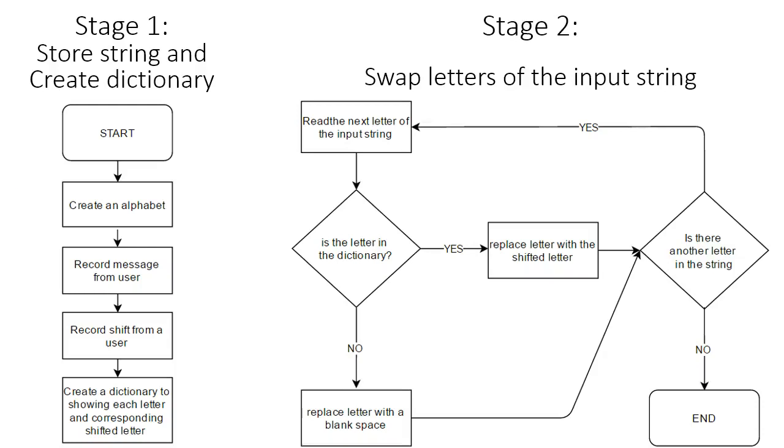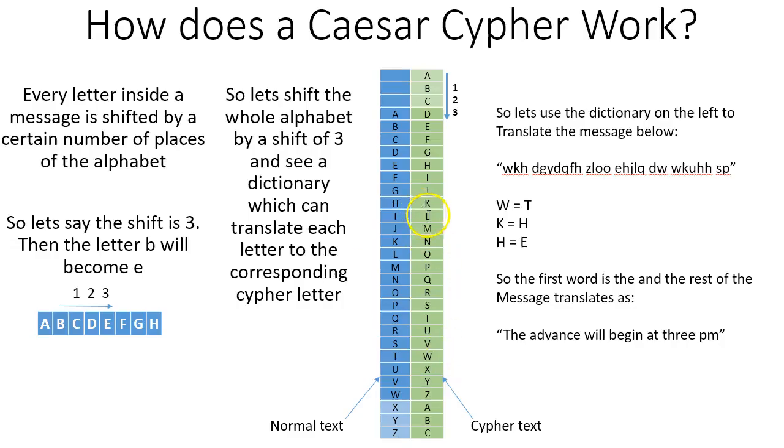An algorithm which is more close to code looks a bit like this. So we are going to do this problem in two stages. The first stage is creating that dictionary. And the second stage is using that dictionary to swap letter by letter from normal to ciphertext. And the way we're going to create a dictionary is we're simply going to take an alphabet and record a shift from a user and then create a dictionary where you have alphabet letters and their corresponding values.